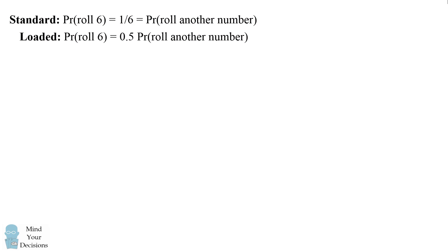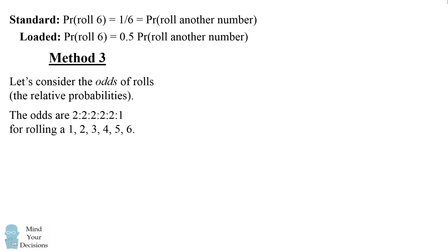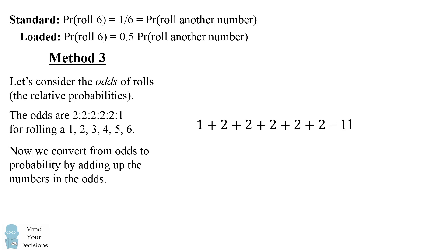There's another way you could have solved this problem. You could have also thought about the odds of the rolls, or the relative probabilities. So the odds of rolling a 6 will be 2 to 1 against rolling a 6. It'll be twice as likely to roll any other number than rolling a 6. Now in order to convert these odds into probabilities, what we do is we add up all of these numbers. We have 1 for the 6 and we have 5 terms of 2. This will be equal to 11.